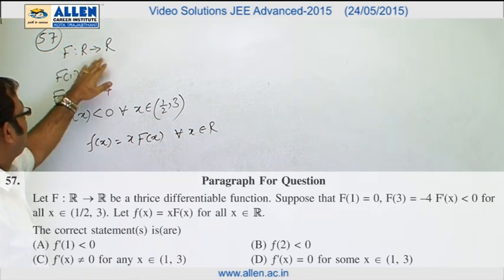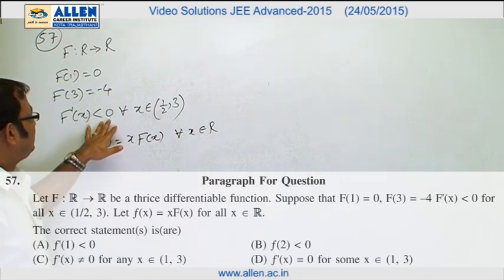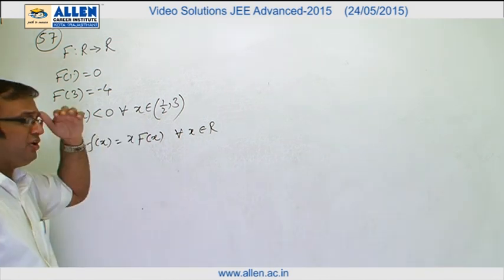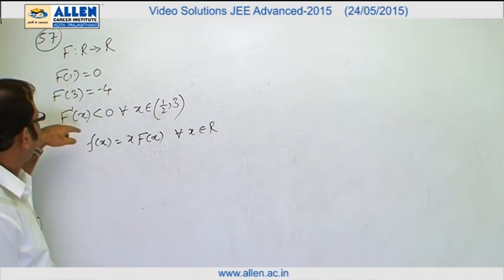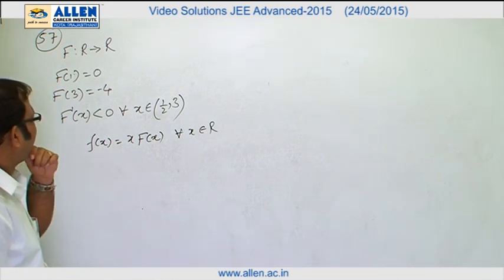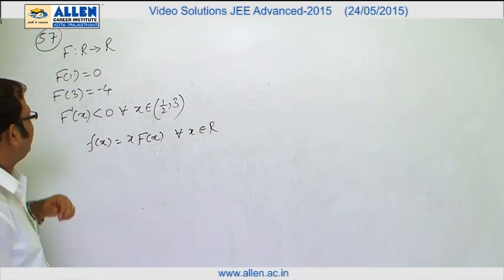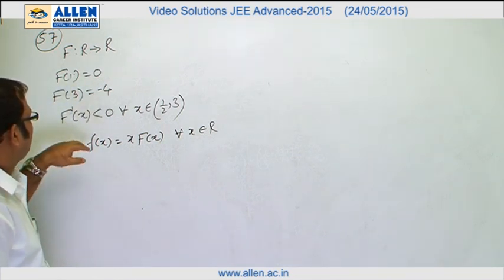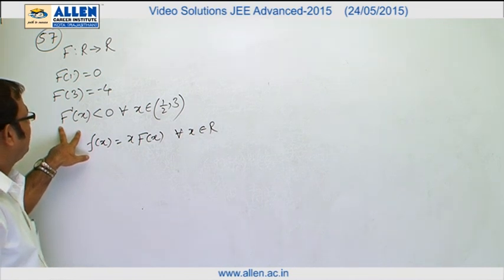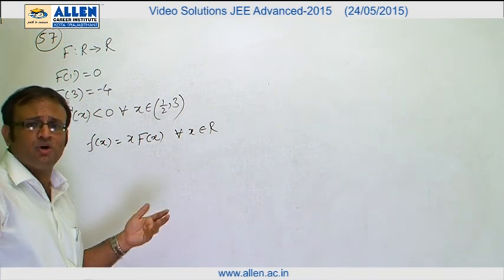In question 57, we are given capital F: R→R with F(1) = 0, F(3) = -4, and F'(x) < 0, meaning F(x) is a decreasing function throughout. In the open interval (1, 3), we can safely conclude that F(x) is a negative function, because at x=1 the value is 0, at x=3 the value is -4, and the function is decreasing since the derivative is negative.